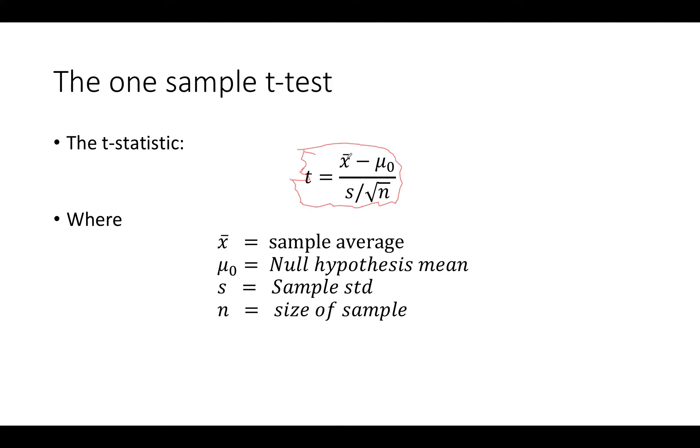and the null hypothesis mean. So if the null hypothesis is correct this difference should be small. If we can show that it's large then we show that the null hypothesis is incorrect.